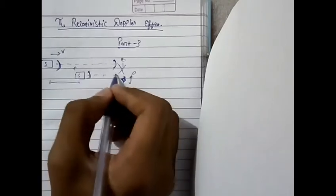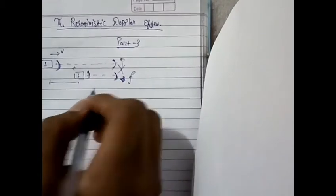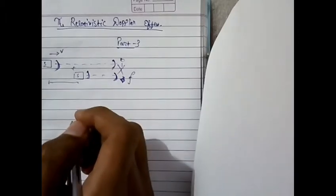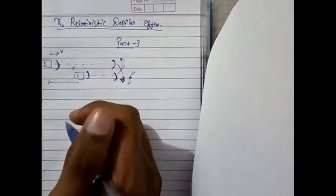The length of the crest, I mean the distance between the two crests should decrease and that's the Doppler effect and that is given by the equation.